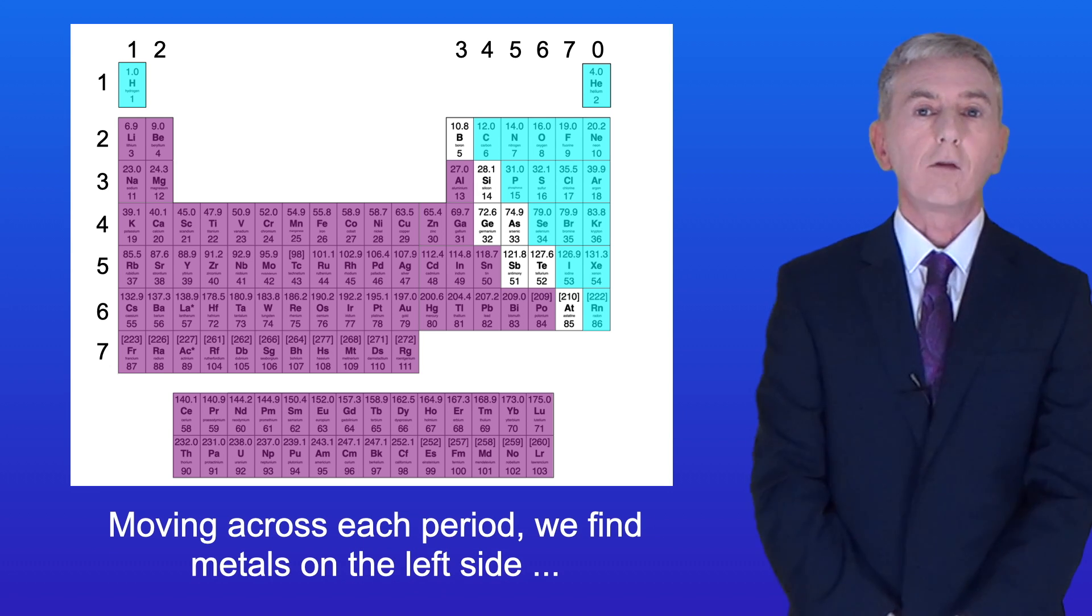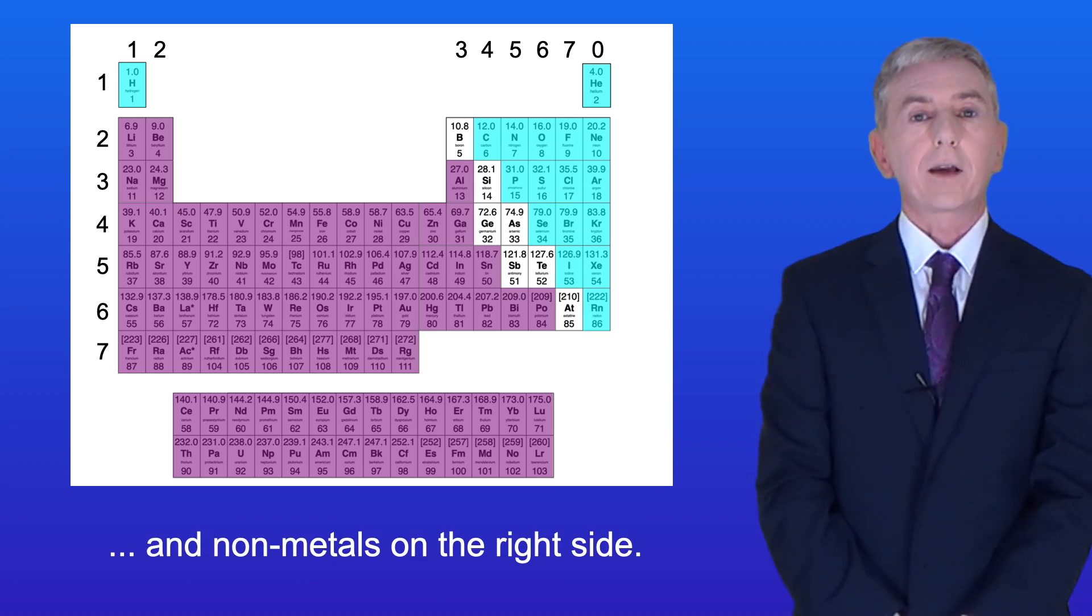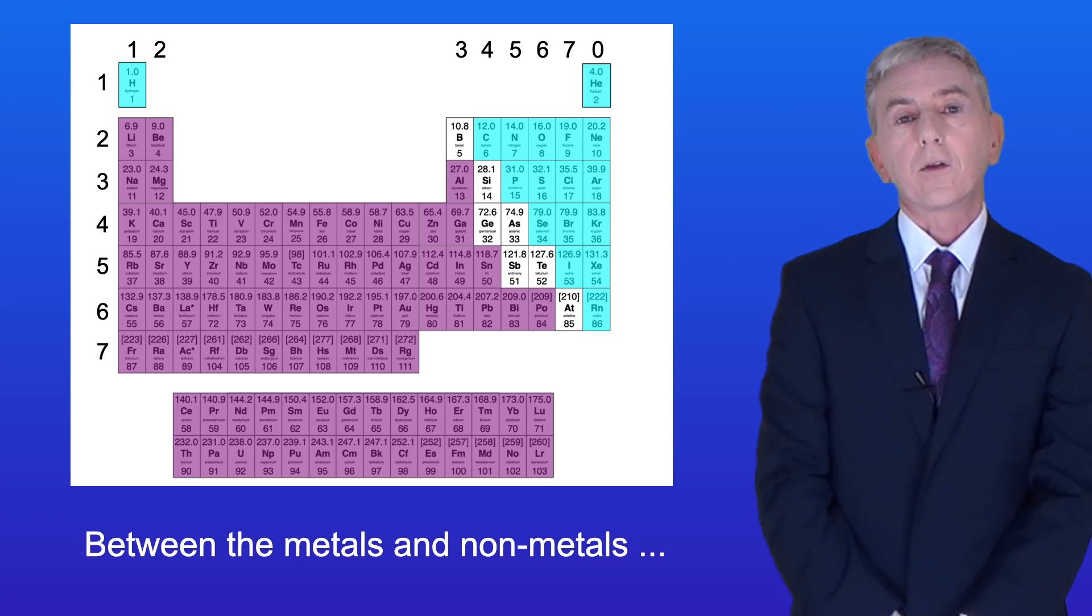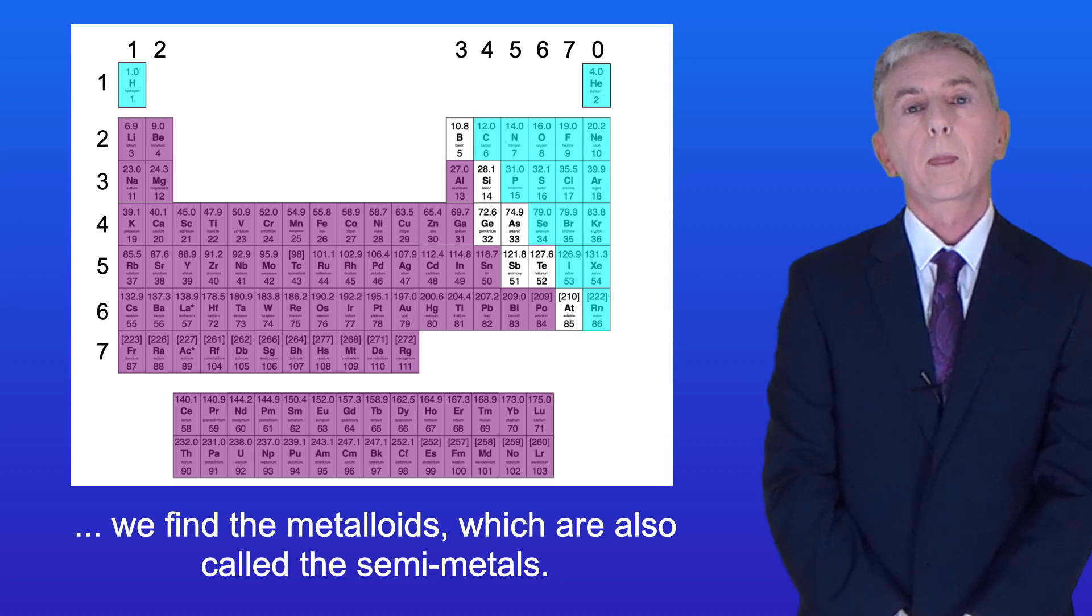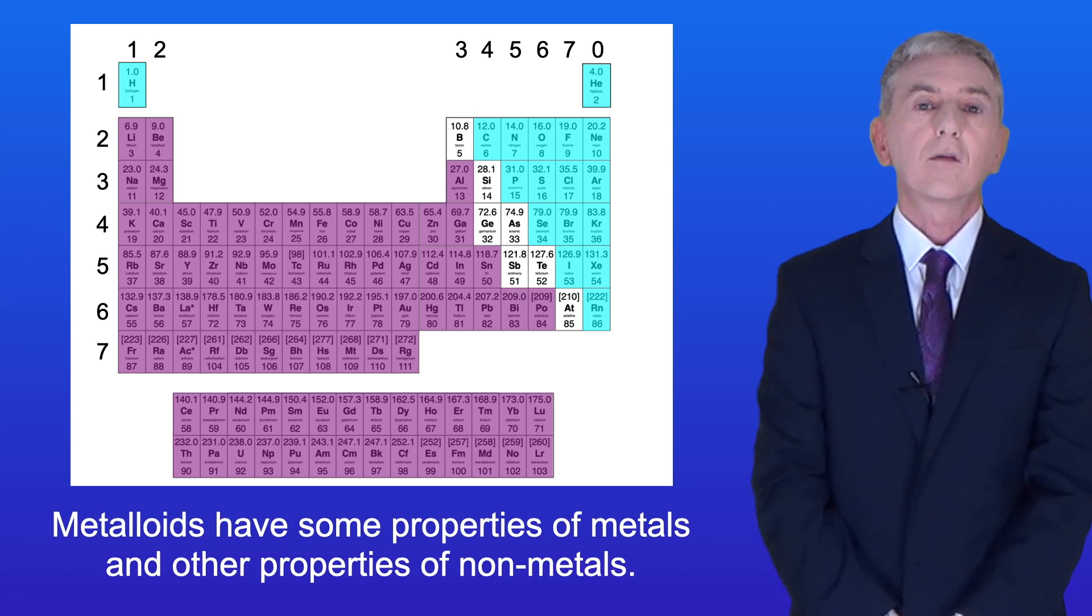Moving across each period we find metals on the left side and non-metals on the right side. Between the metals and non-metals we find the metalloids, which are also called the semi-metals. Metalloids have some properties of metals and other properties of non-metals.